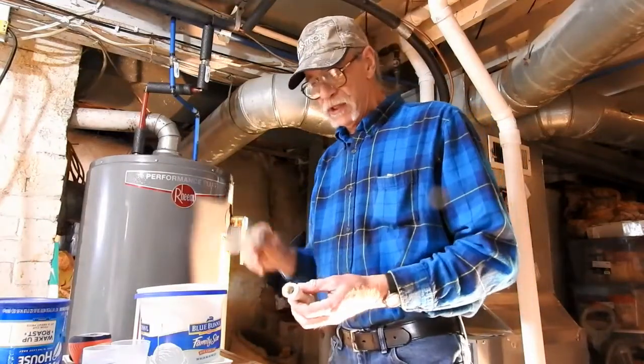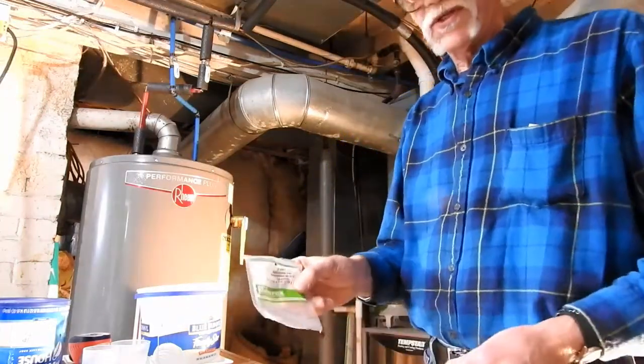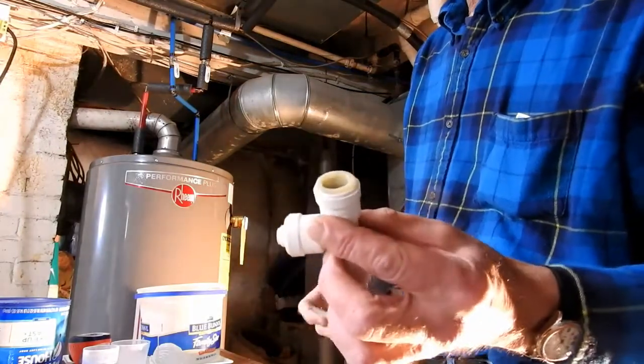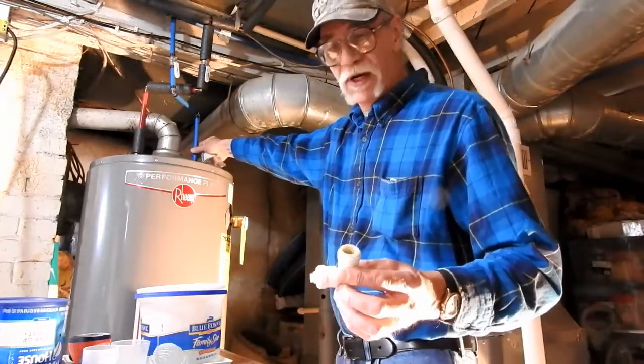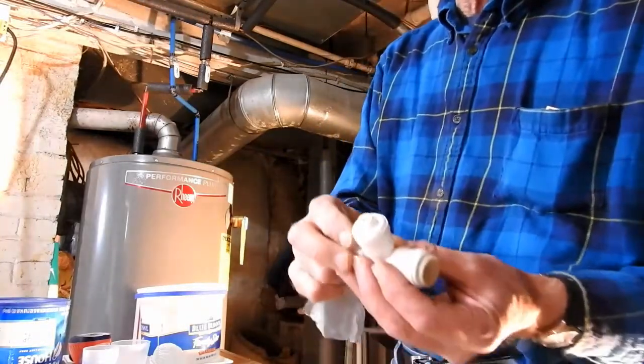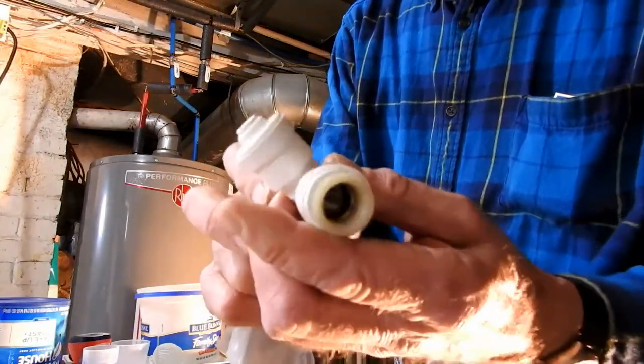What we're going to use is this Watts reducing tee. Half inch, because this is half inch on the water heater, half inch on both ends and then a reduction tee down to a quarter of an inch.